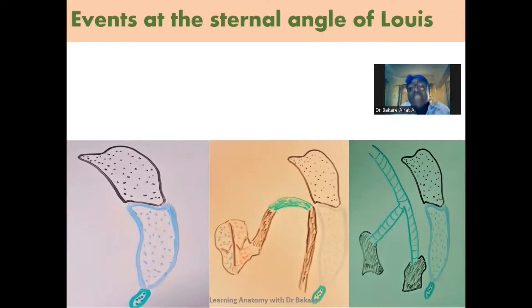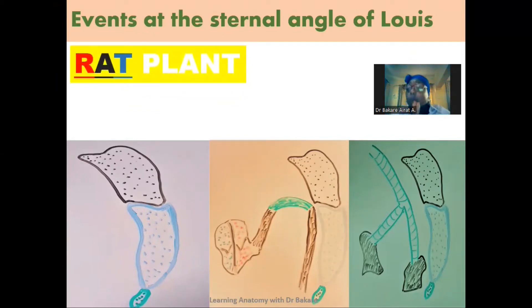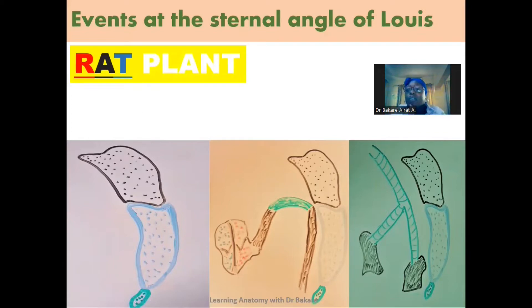Welcome. Let's look at the events that occur at the Sternal Angle of Louis, which is also referred to as the Manubriosternal Joint. The Sternal Angle of Louis was first described by Alexander Louis, and it corresponds to the level of the T4-T5 thoracic vertebra. At the Sternal Angle of Louis, we have a number of events that occur, and we'll be using the mnemonic RAT PLANT, with each letter establishing the events that occur at this region.